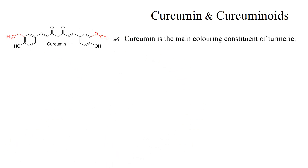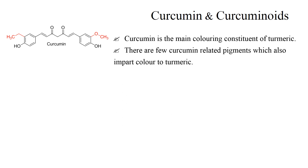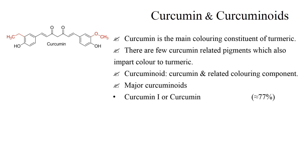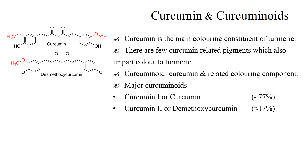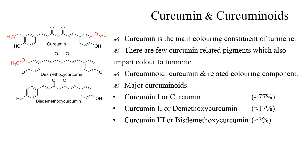Curcumin is the main coloring constituent of turmeric. There are a few curcumin-related pigments which also impart color to turmeric. The term curcuminoid is used for curcumin and these related coloring components. The major curcuminoids are: curcumin 1, called curcumin; curcumin 2, called demethoxycurcumin; curcumin 3, called bisdemethoxycurcumin; and cyclocurcumin. This is all about curcumin — hope you enjoyed the session. Soon we will meet with another topic. Thank you.